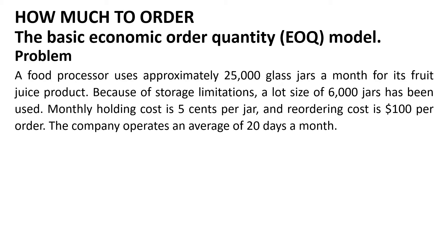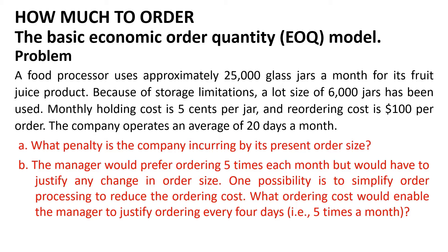A food processor uses approximately 25,000 glass jars a month for its fruit juice product. Because of storage limitations, a lot size of 6,000 jars has been used. Monthly holding cost is 5 cents per jar and reordering cost is $100 per order. The company operates an average of 20 days a month.